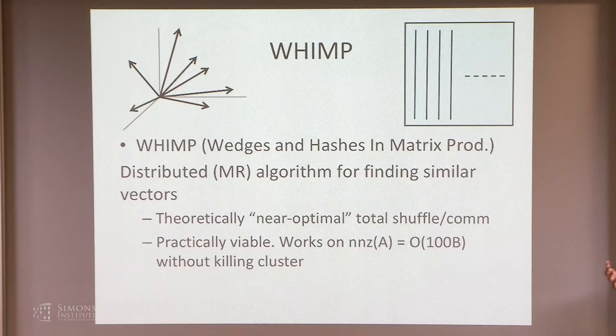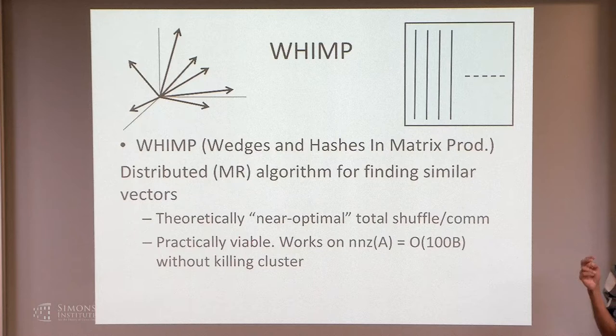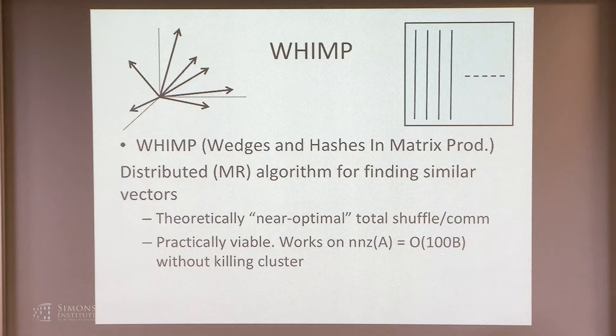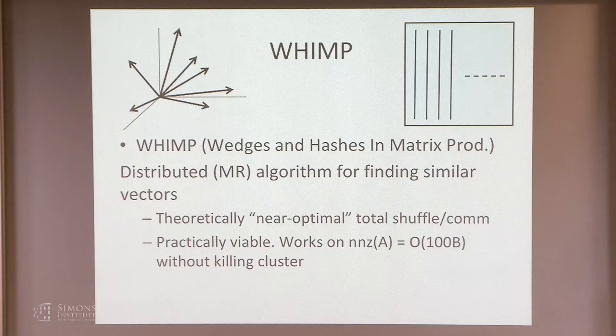The result we have is called WIMP. It's basically a MapReduce algorithm for finding similar vectors. It has theoretically near-optimal shuffle or communication cost, and it's practically viable — it actually worked on this instance. The reason I use O-notation is because I'm not allowed to disclose exactly how many edges or vertices they have, but basically it works on a matrix with about 100 billion non-zeros without killing your cluster. It runs in about a day, which is reasonable. 100 billion is about a terabyte — barely storable on a very large machine — but if any intermediate work blows up, you have to distribute.